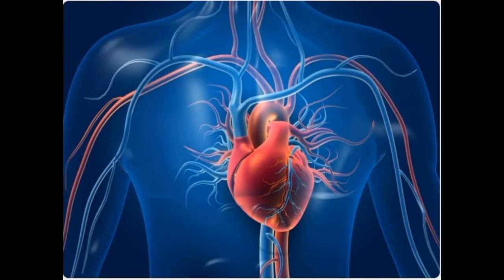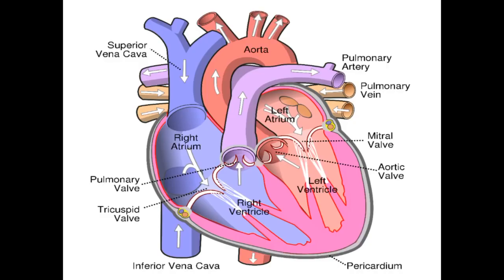The heart is a muscular organ. The human heart is made of involuntary cardiac muscles. It is made of two upper chambers and two lower chambers.